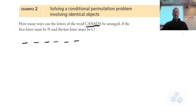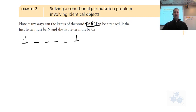There are restrictions: N has to be the first letter. How many N's are there? Just one — so we have one option for the front. C has to be the last letter, and there's only one C, so one option for the back. Fundamental counting principle says one option for the front, one option for the last, due to the restrictions.